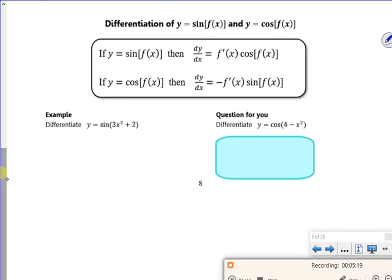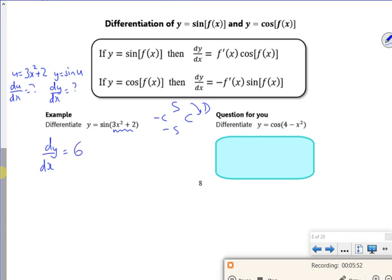So we know about sine and cos. Remember sine goes to cos, goes to minus sine, goes to minus cos. So if I differentiate sine, I know it's going to go to cos. So I would have u is 3x² + 2, and y is sine u. And then I differentiate them both, and multiply them together. But all I need to do is differentiate that. So I've got 3x² + 2, if I differentiate it, it's 6x. And then I know if I differentiate sine, it goes to cos of the original function.